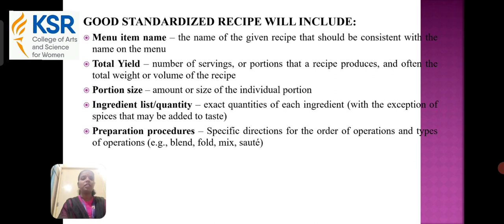A good standardized recipe will include the menu item name, total yield, portion size, ingredient list, and preparation procedures. The name of the given recipe should be consistent with the name on the menu. The total yield is the number of servings or portions that a recipe produces, and often the total weight or volume of the recipe. The amount or size of the individual portion is the portion size. Exact quantities of each ingredient are covered under the ingredient list. Preparation procedure covers specific directions for the order and types of operation — for example, blend, fold, mix, and sorting.